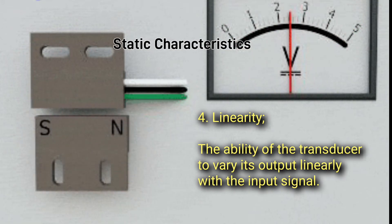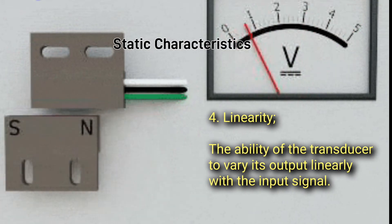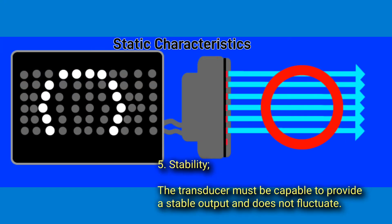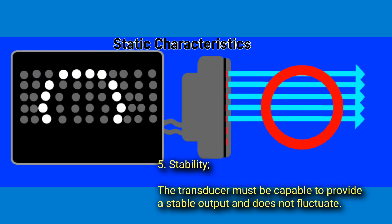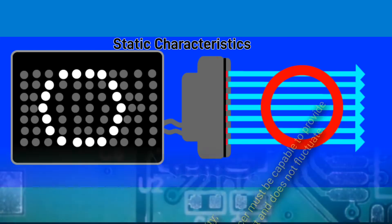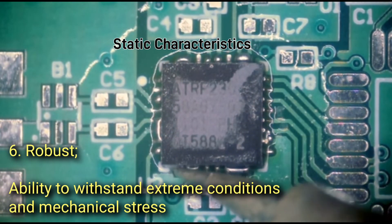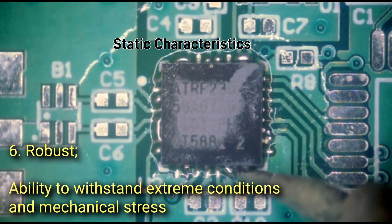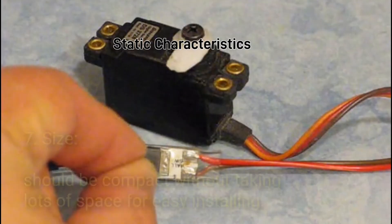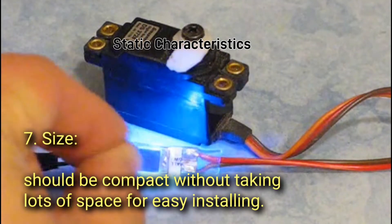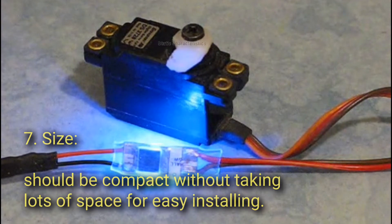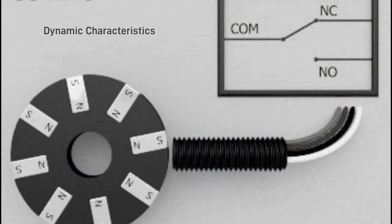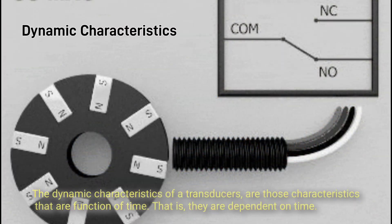Four, linearity — the ability of the transducer to vary its output linearly with the input signal. Five, stability — the transducer must be capable of providing a stable output that does not fluctuate. Six, robustness — the ability to withstand extreme conditions and mechanical stress. Seven, size — it should be compact without taking a lot of space, for easy installation.